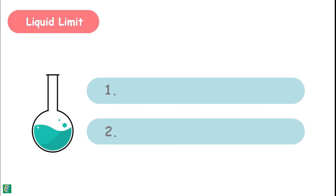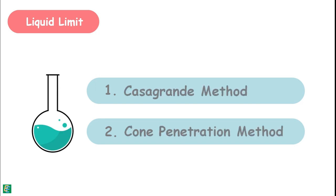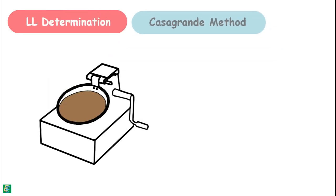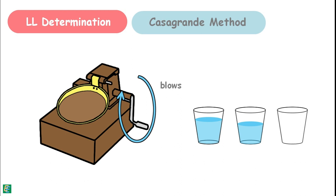We can determine the liquid limit by two laboratory methods: Casagrande method and cone penetration method. In Casagrande method, we use an apparatus to give blows to the soil of different water contents.